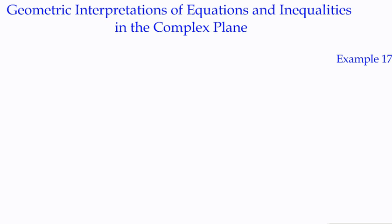This is example 17 and a really good heading for this lesson: it's called 'Geometric Interpretations of Equations and Inequalities in the Complex Plane.' A geometric interpretation is simply a fancy way of saying a picture — in this case, it means a graph. When you plot points on a graph or draw a straight line, we're effectively producing a geometric interpretation.